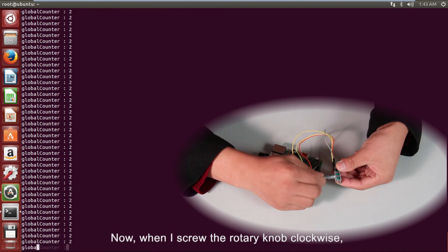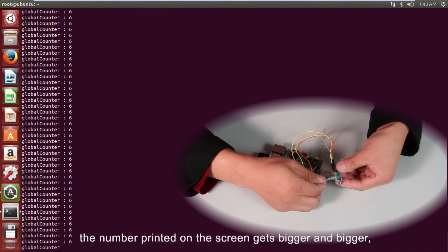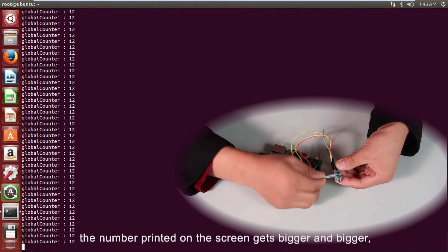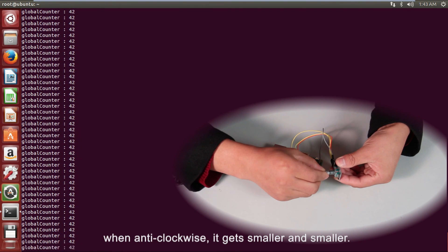Now, when I screw the rotary knob clockwise, the number printed on the screen gets bigger and bigger. When anti-clockwise, it gets smaller and smaller.